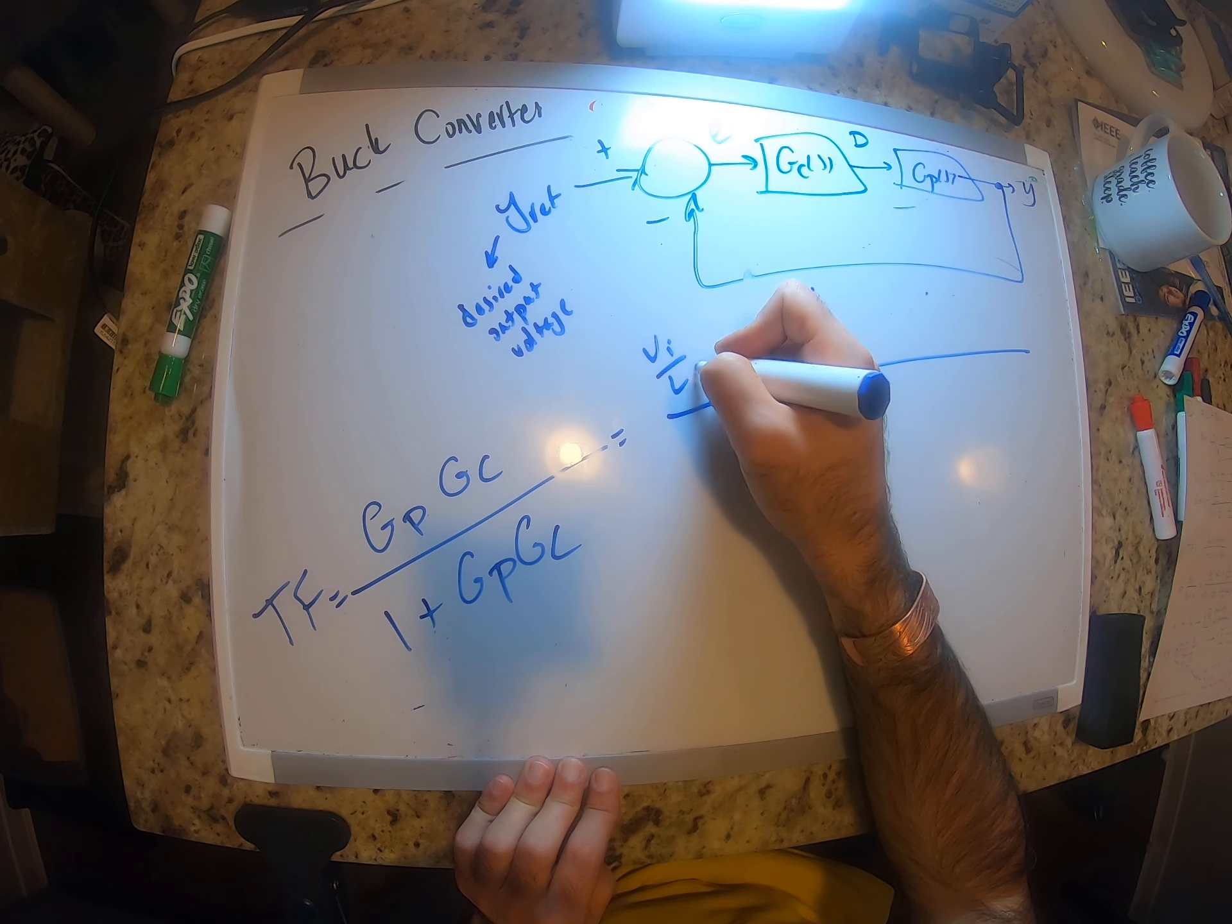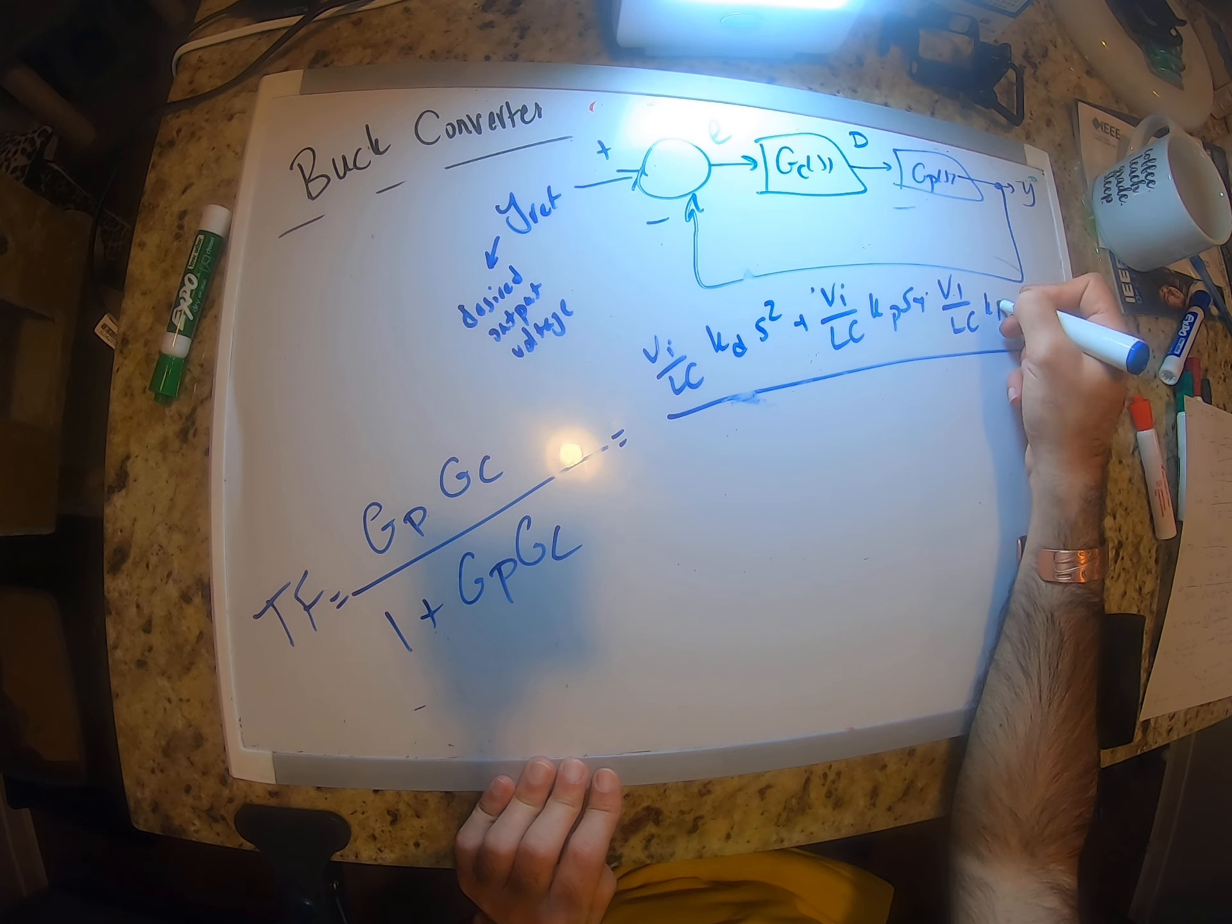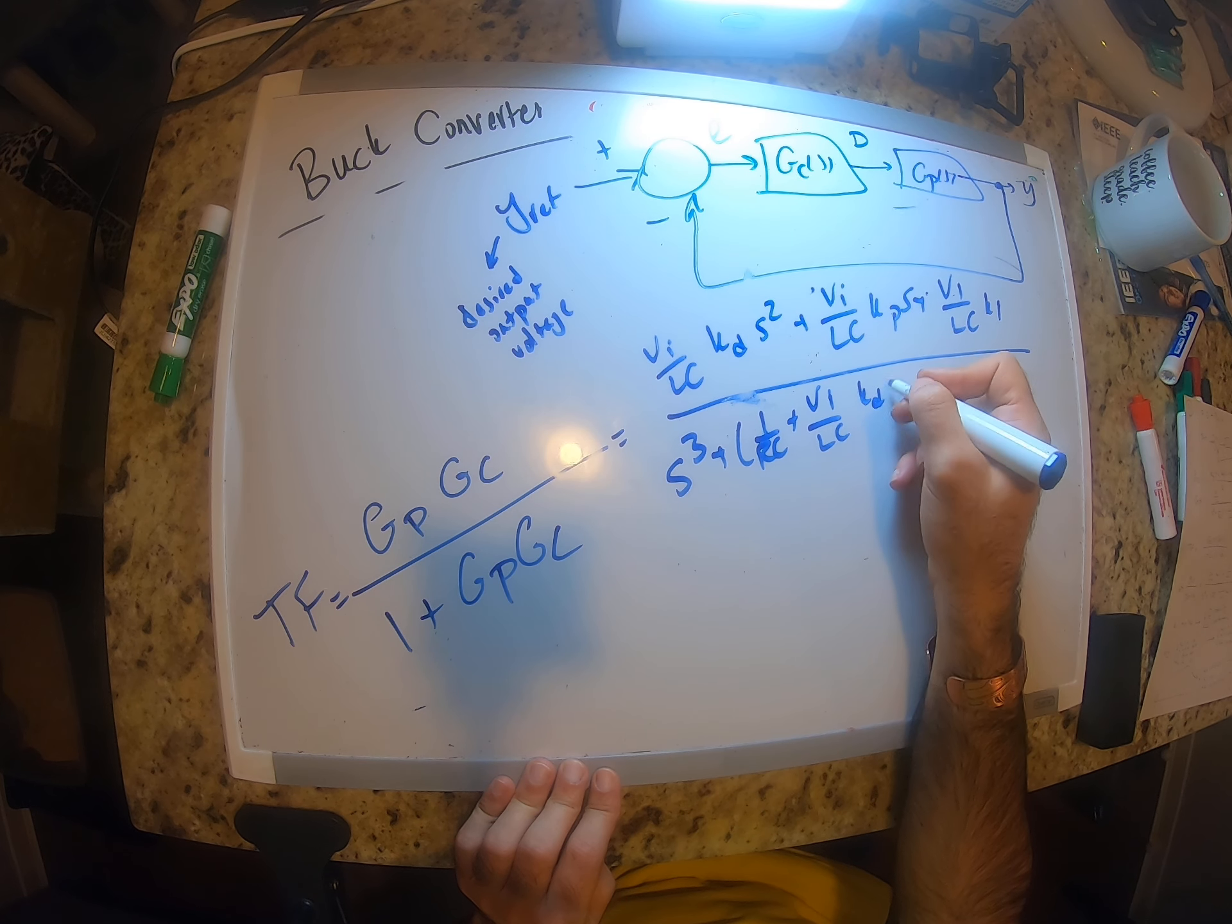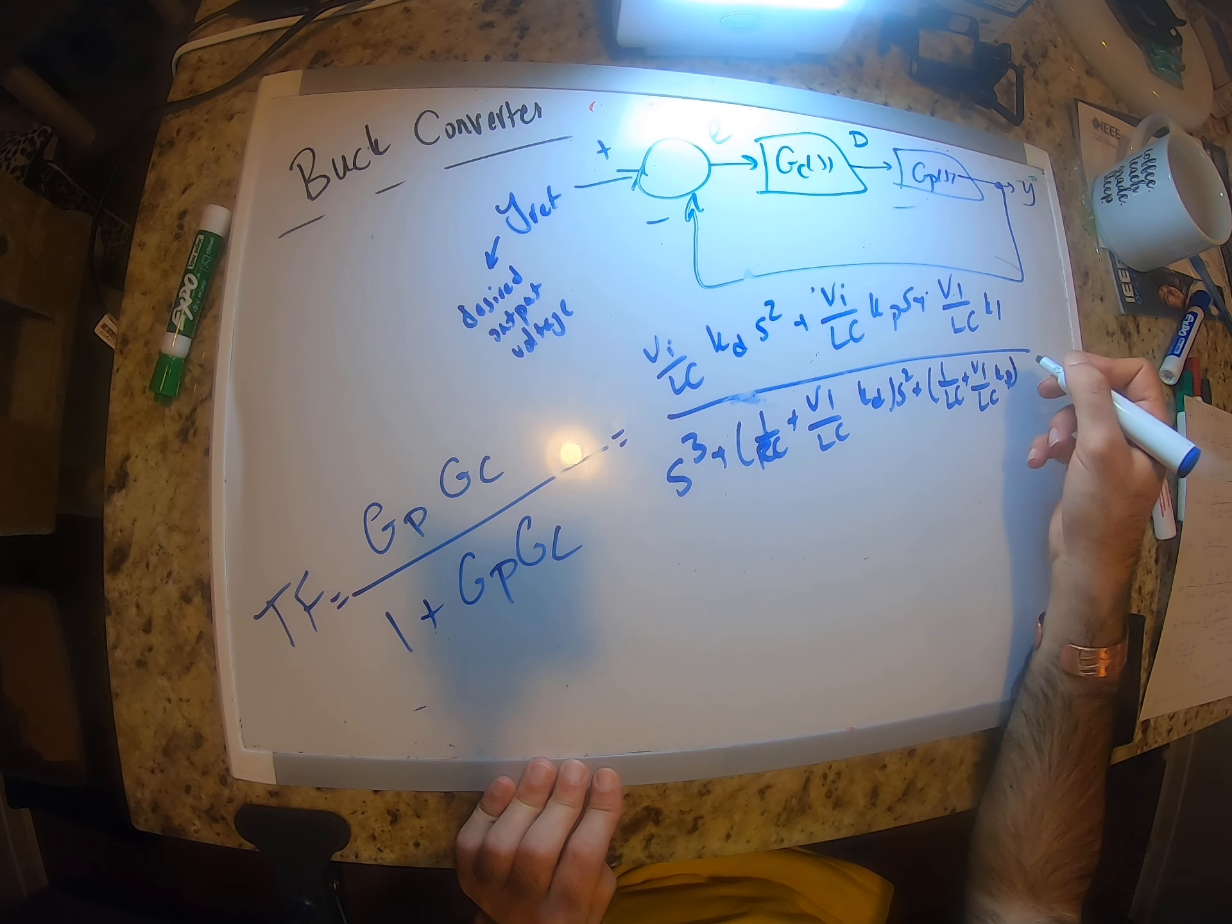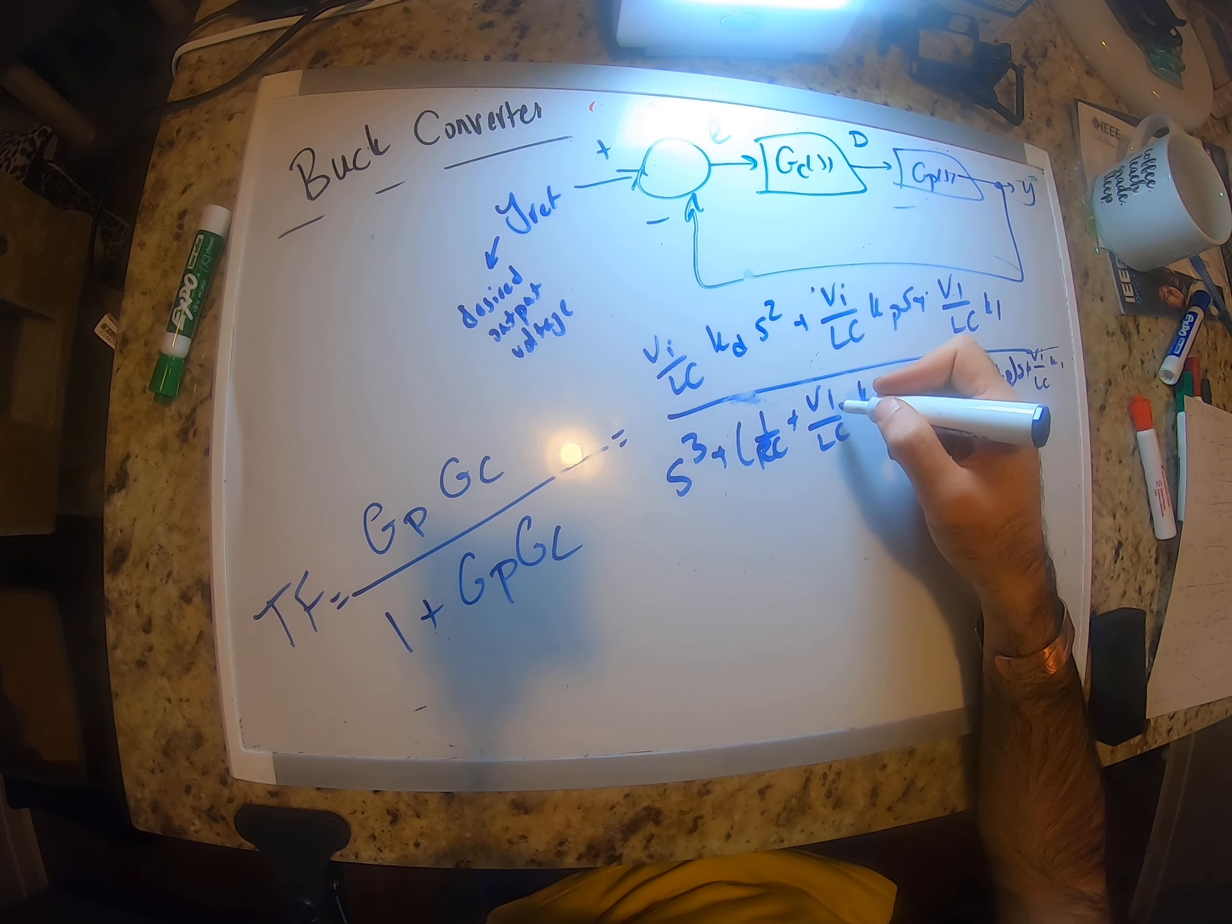Vi over LC Kd s squared plus Vi over LC Kp s plus Vi over LC Ki, s cubed plus 1 over RC plus Vi over LC Kp times s plus Vi over LC Kp times s plus Vi over LC K1, right?